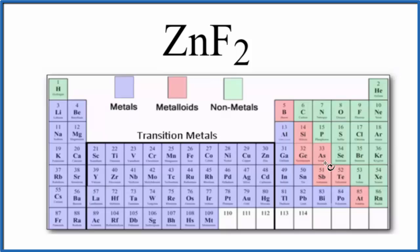So if we look at the periodic table, we find zinc right here. Zinc is a metal, and then we find fluorine, that's right over here. Fluorine is a non-metal. So in general, when we have a metal and a non-metal, it's an ionic compound.